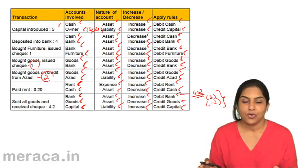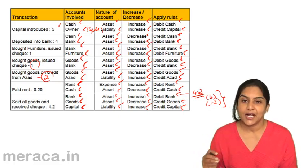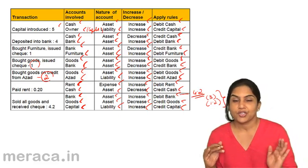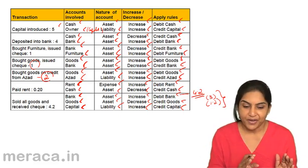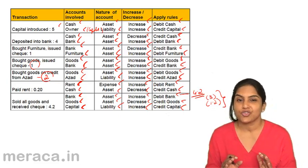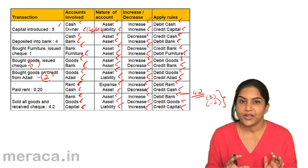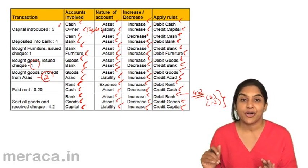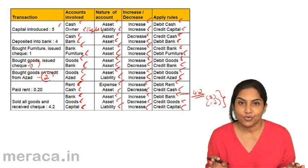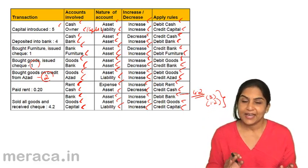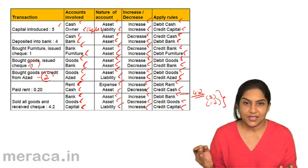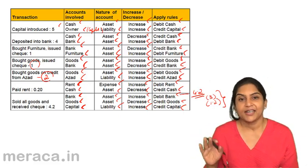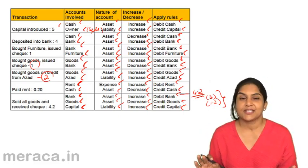This is how we go about passing accounting entries — deciding which account is to be debited and which is to be credited. Identify the transaction, identify the accounts involved, determine the nature of the account — is it an asset or a liability, an income or an expense — then apply the rules: increase in asset is debit, decrease in asset is credit; increase in liability is credit, decrease in liability is debit.